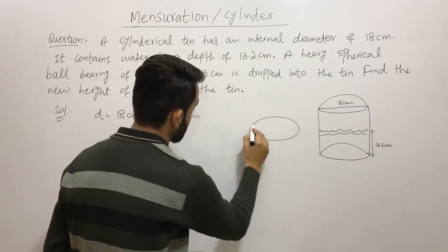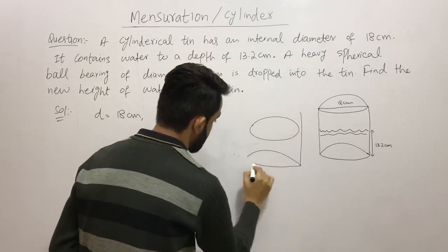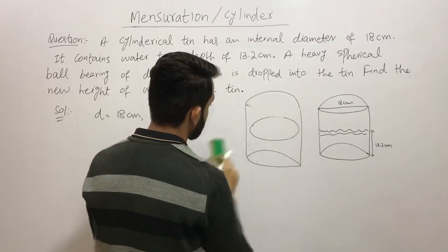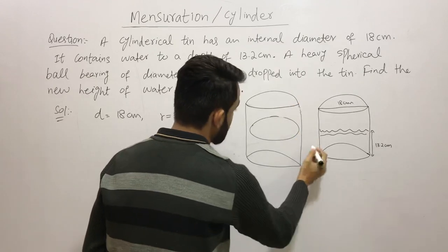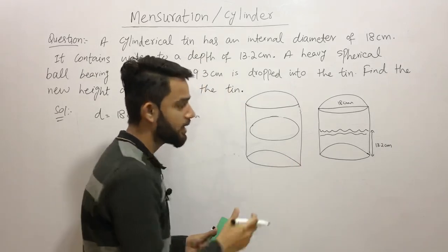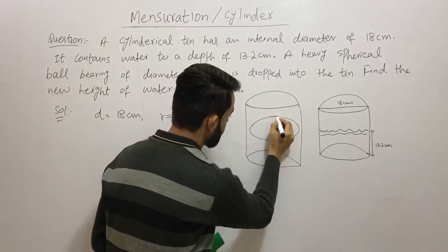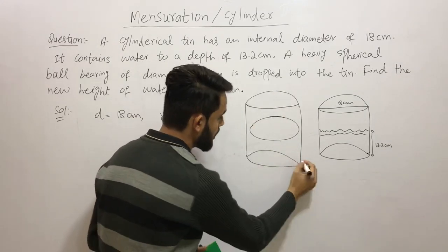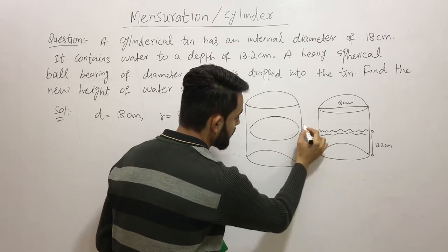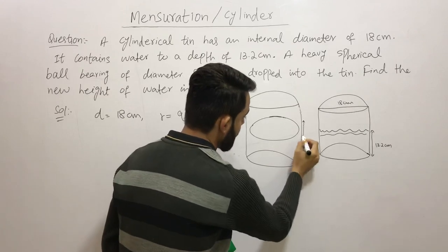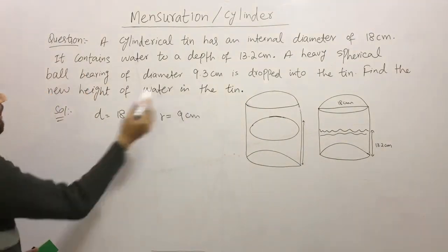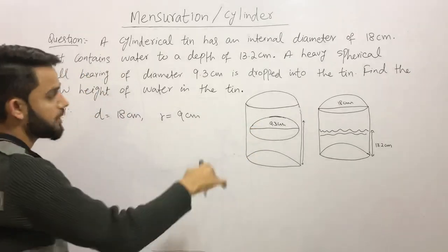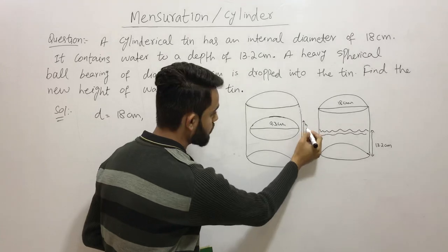Here I'm drawing the spherical ball and the cylinder. Once we drop the spherical ball bearing into the cylinder, the water level increases — it goes from the initial level up to a new higher level. The spherical ball bearing has a diameter of 9.3 centimeters. We need to find this new height of the water after it is dropped in.